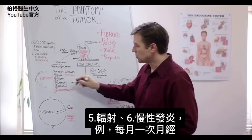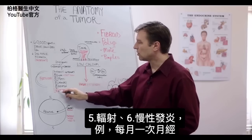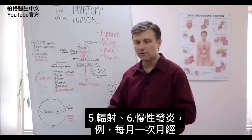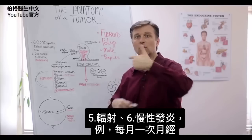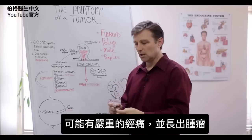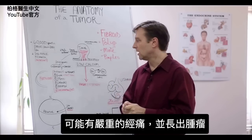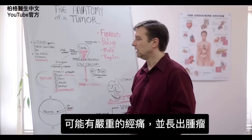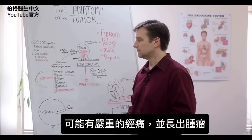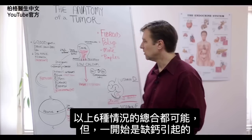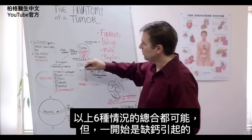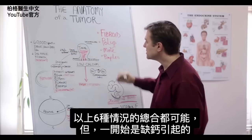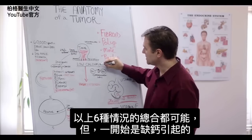And then you have radiation. Now chronic inflammation — let's say you're having a menstrual period every single month — you're setting yourself up for growing tumors from that terrible, heavy, crampy cycle. So it really is a combination of all these things, but it all starts with calcium.